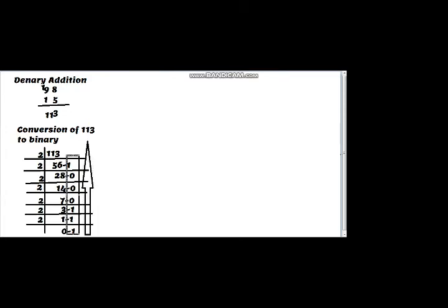Now the answer is formed by drawing an arrow from bottom to the top. I am writing the final answer: 1 1 1 0 0 0 1. But as you have to make sets of 4 bits, you need to add 1 0 at the start to complete the sets of 4 bits. Now we have done the binary conversion of 113.